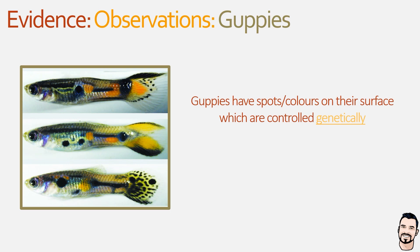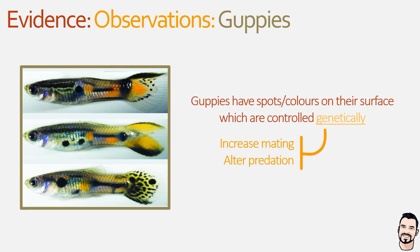Why might they do this? There are two factors. First, male guppies can use spots as a way of attracting females, thereby increasing the mating rate. Second, male guppies can blend into their environment, allowing some form of protection from predators. A researcher named John Endler performed microevolution experiments utilising artificial selection to manipulate the number of spots on male guppies.